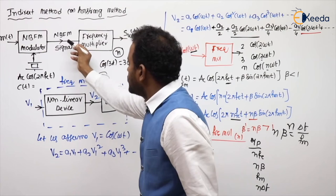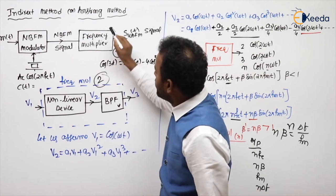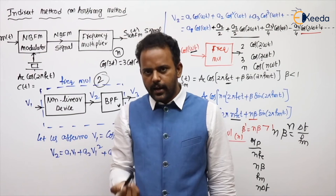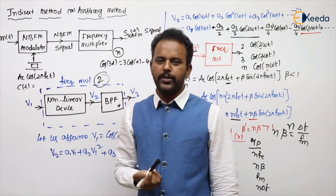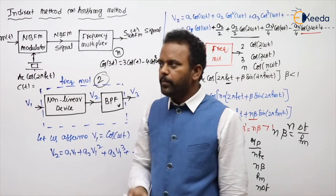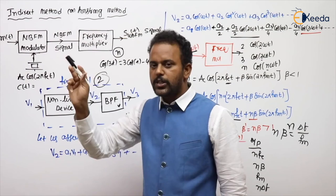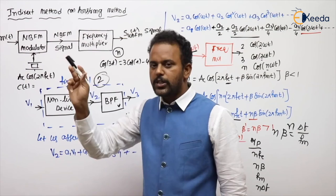In the indirect or Armstrong method, we first generate an NBFM signal and then convert it to wide band FM using frequency multipliers. Armstrong was an American engineer who spent much of his earnings on patent fees for frequency modulation. His wife later received large amounts from FM patents in his name. A key point: the indirect method uses a crystal oscillator to get a stable fc, and we must remember the frequency multiplier input-output relations.